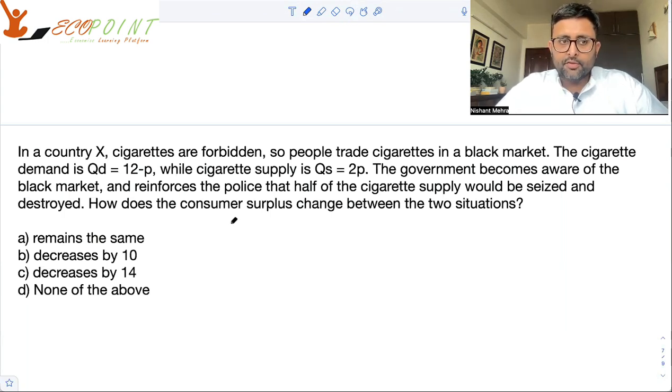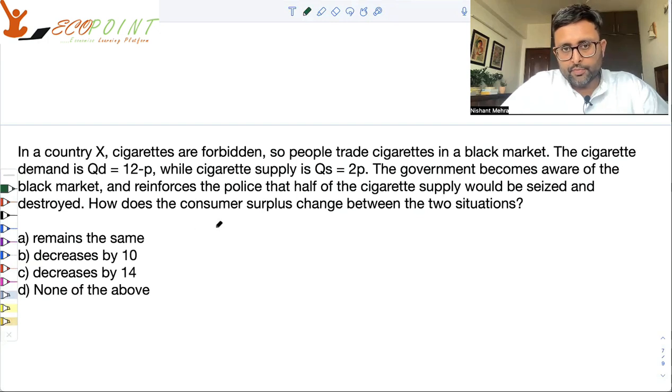The government becomes aware of the black market and reinforces the police that half of the cigarette supply would be seized and destroyed. How does the consumer surplus change between them? Okay, before intervention.